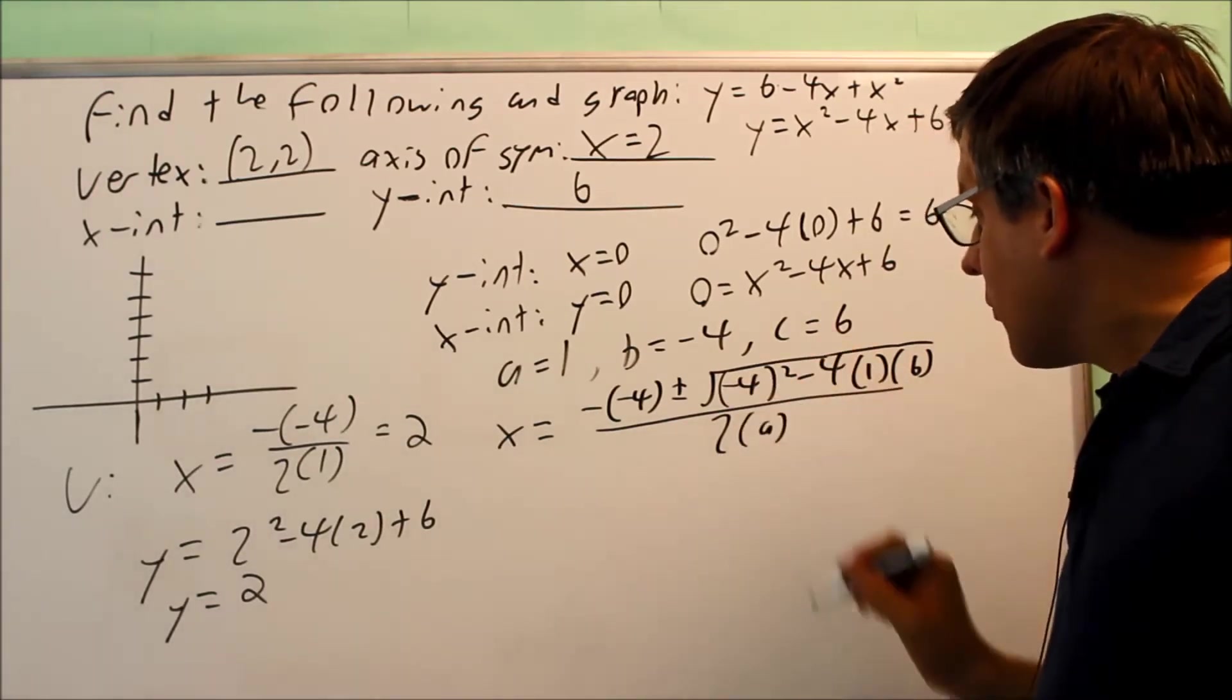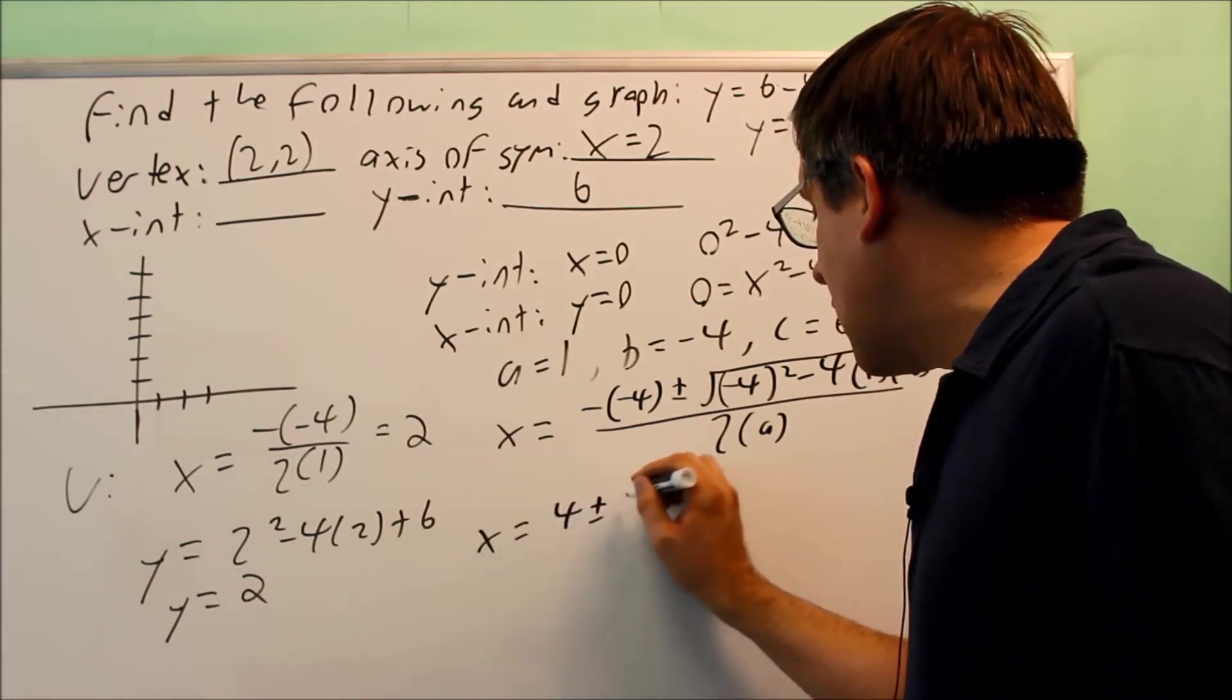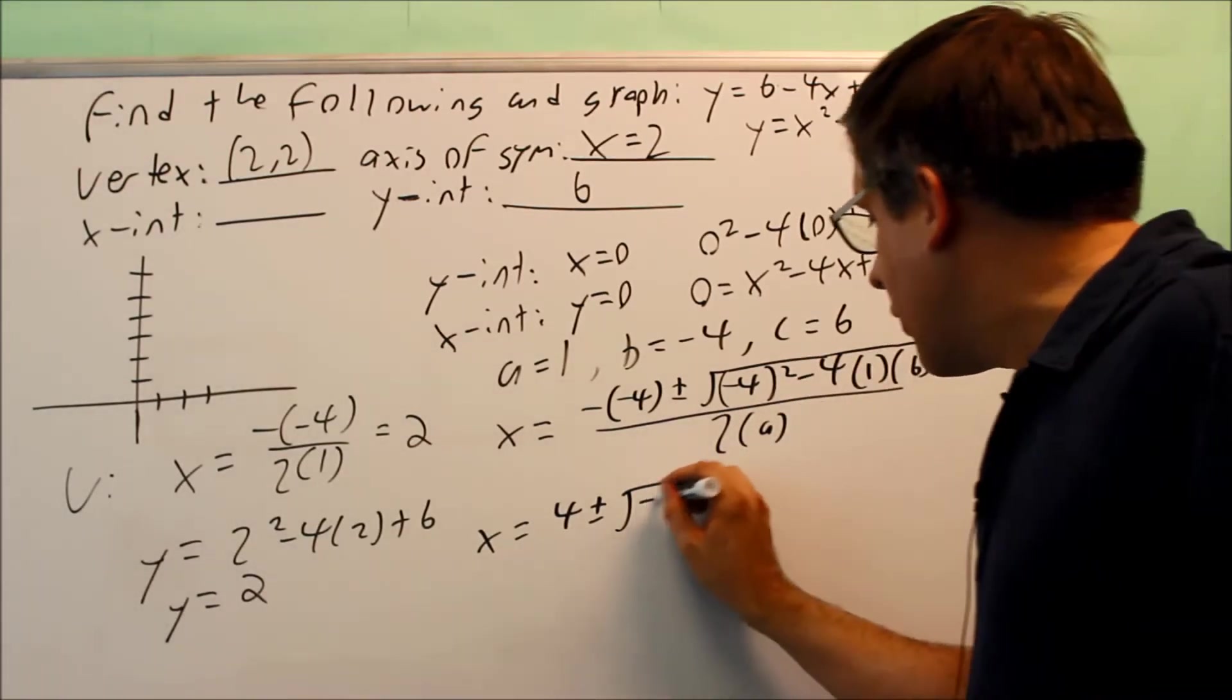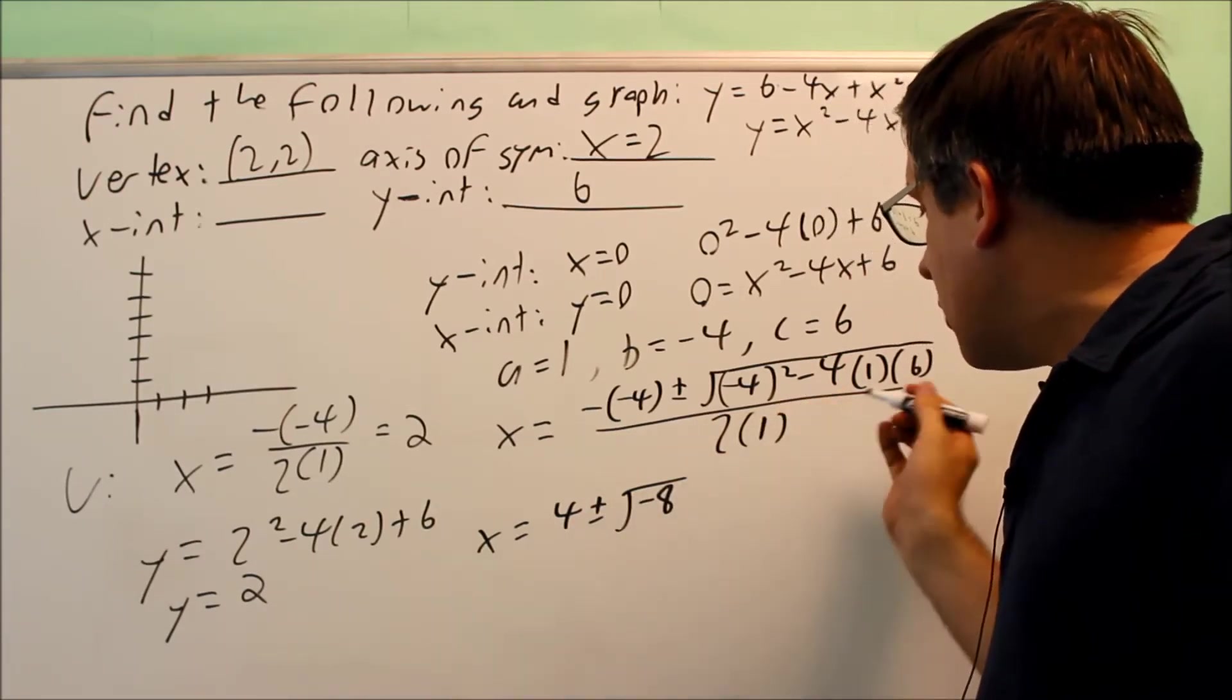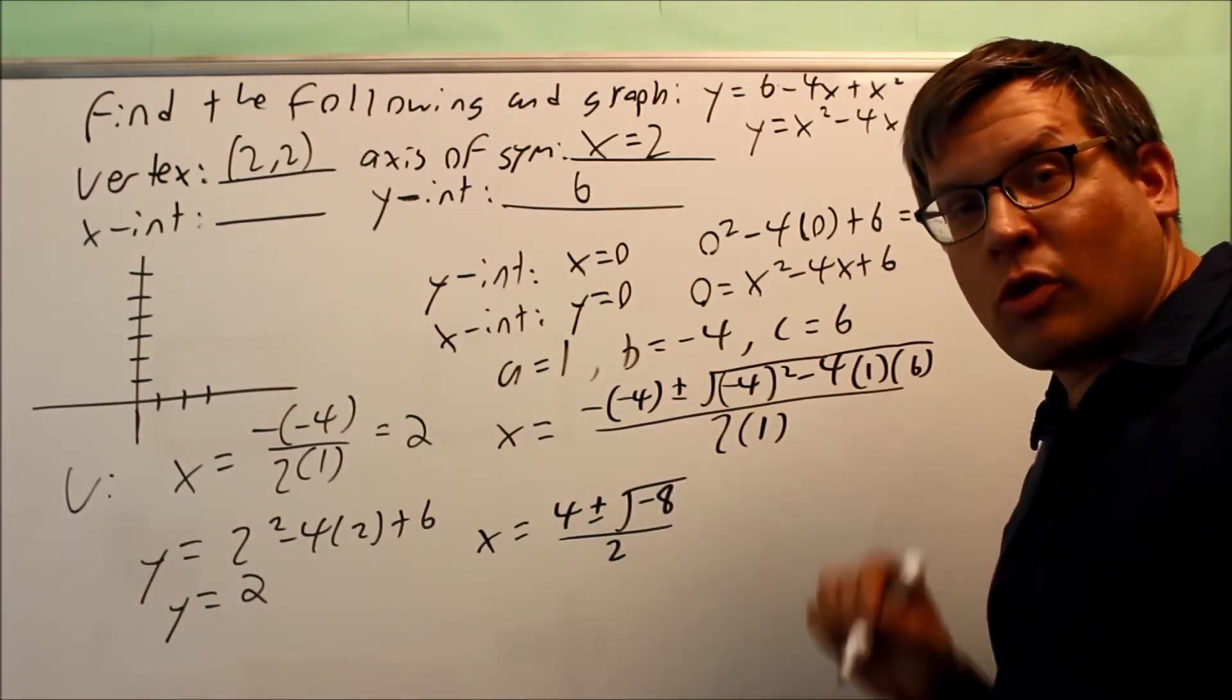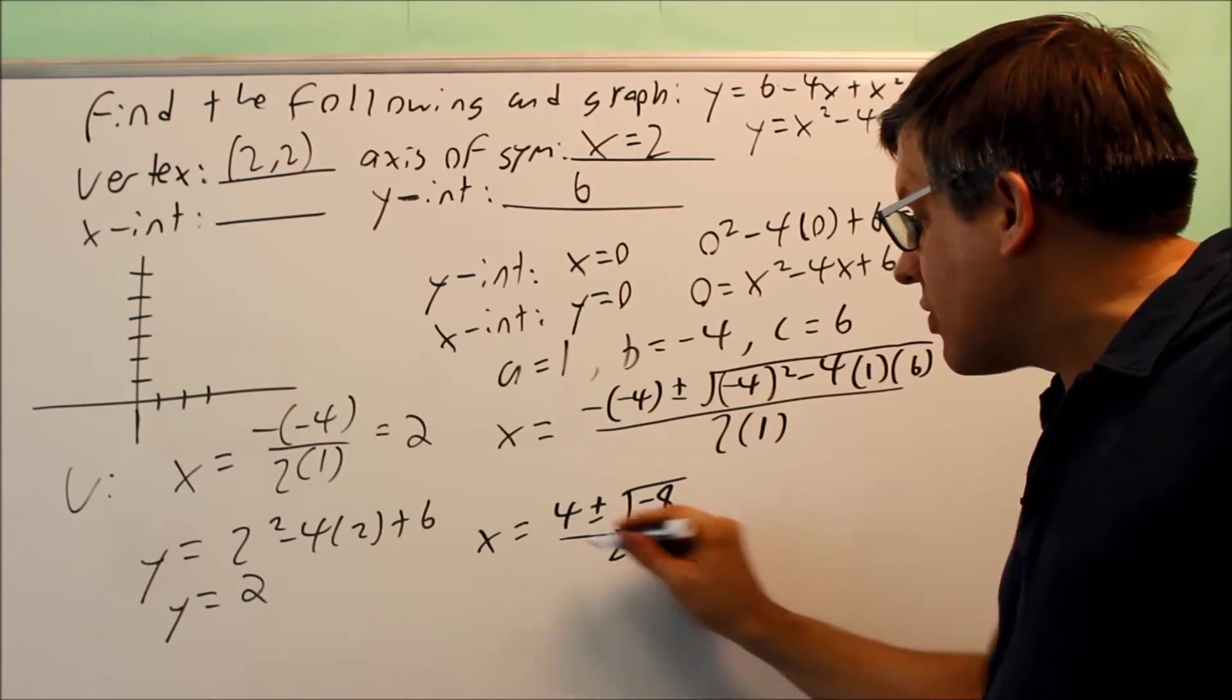We want to simplify this down as much as possible. So I get 4 plus or minus the square root of, I get 16 minus 24 on the inside of that. That's going to give us negative 8. And on the bottom, the a value there should be a 1, so I have a 2 on the bottom. So we notice that there's a negative number inside of square root. That tells us that we're going to have an i as part of our answer.